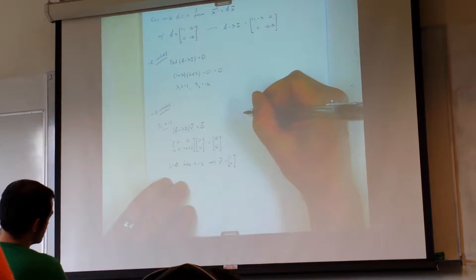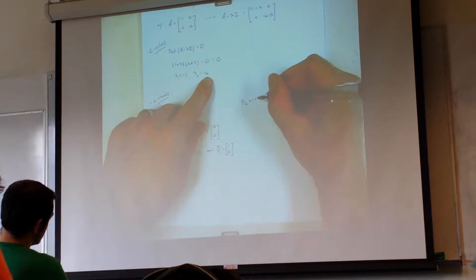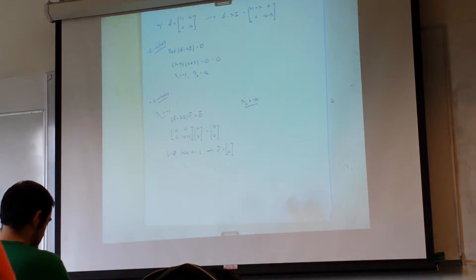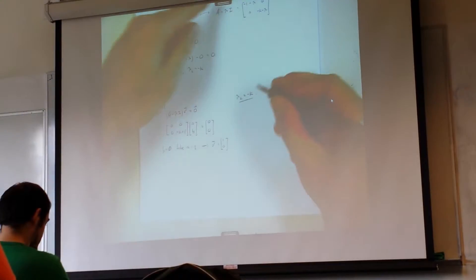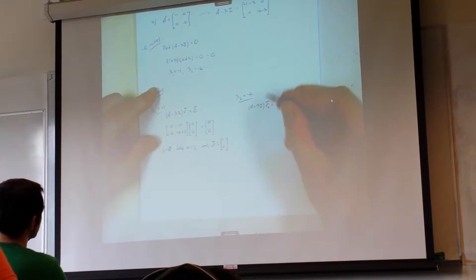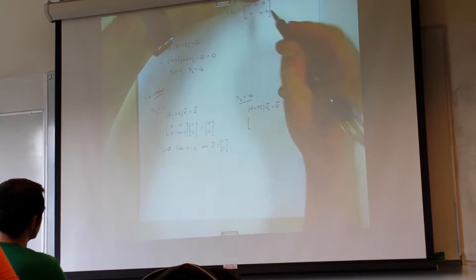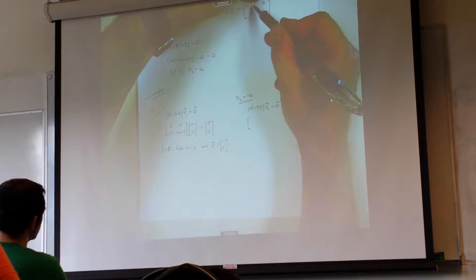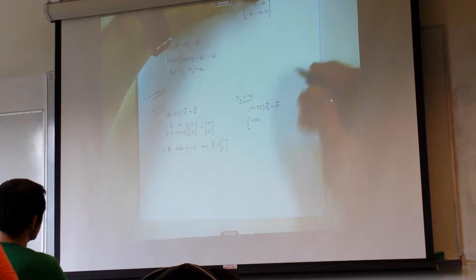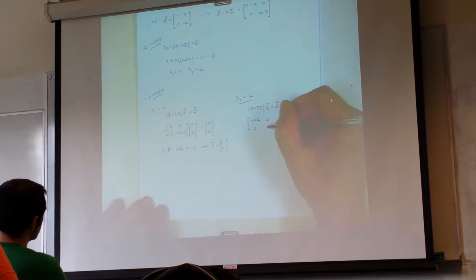Now on the other side, let's do the second eigenvector for eigenvalue negative K. We're going to have A minus lambda I times V2 equals the zero vector, and with lambda 2 being negative K, we're going to have the matrix: negative one minus negative K, that's plus K, so negative one plus K; zero; zero, zero; negative K minus negative K — so that turns out to be zero there as well.